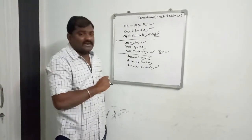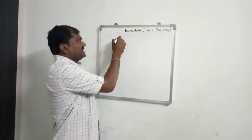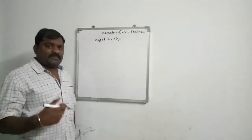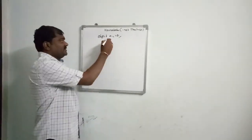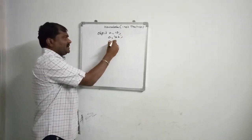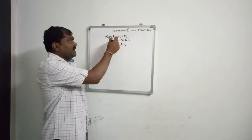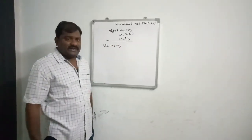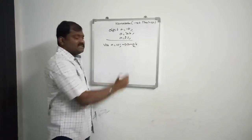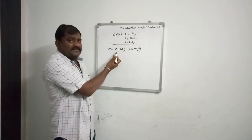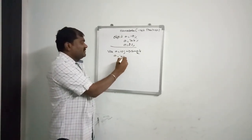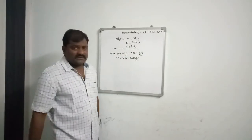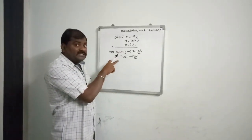There is one more difference between object, var, and dynamic. If you declare object a = 10, the value is object type. If you modify the value, for example a = 2.3, it is still valid because a is always object type. With var a = 10, the data type is decided as integer at compile time. Now if you write a = 'abc', you will get an error, because you cannot store a string value in an integer variable — the data type is fixed as integer at compile time.